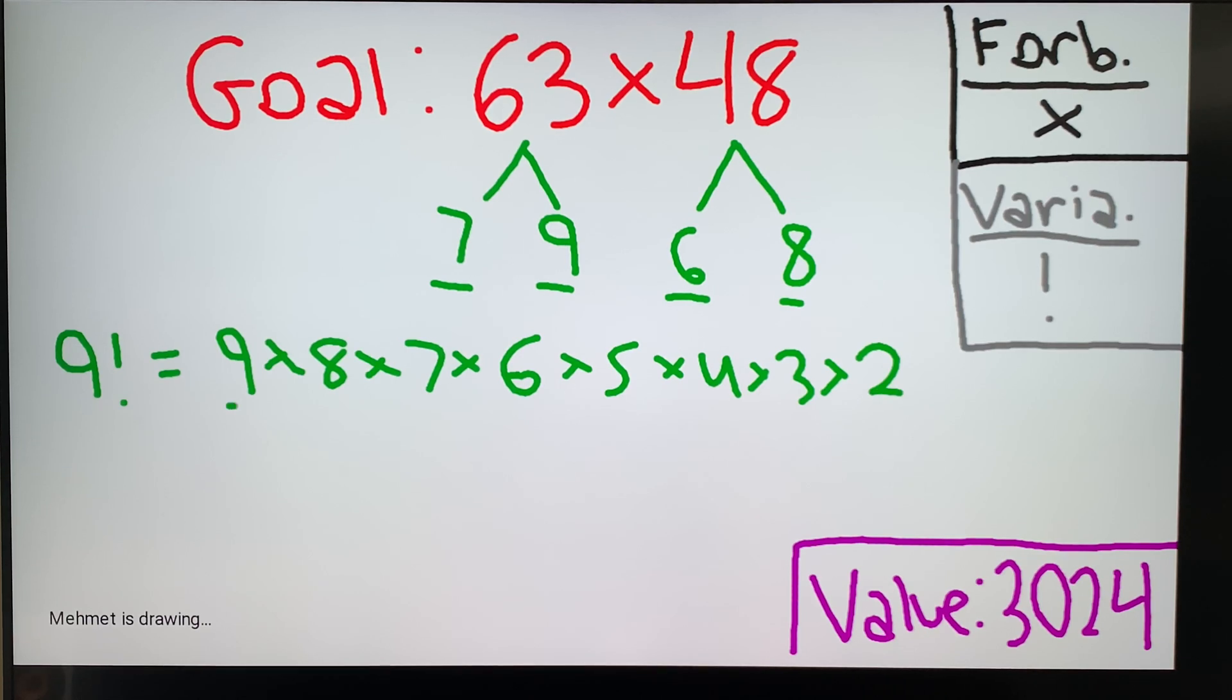We have 9, 8, 7, and 6, but we have 5, 4, 3, and 2, and we don't really want those. That's not part of the solution. So we can divide by 5 factorial, which is equal to 5 times 4 times 3 times 2.